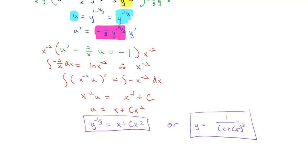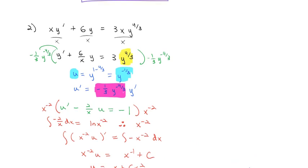Again, solving the linear equation should be review. The new part is identifying the Bernoulli equation with that extra y to the n, then making the substitution u equals y to the 1 minus n to convert it to something we already know how to solve. Now it's your turn to practice. Let me know if you have any questions — good luck.